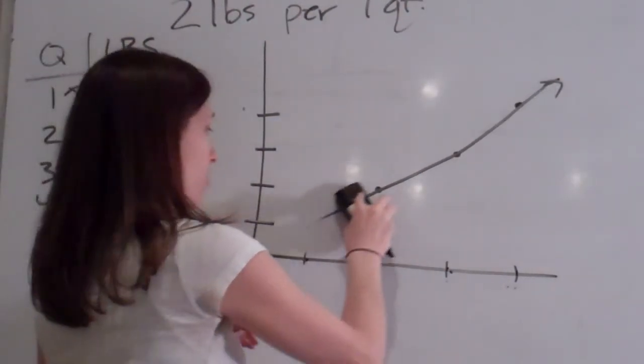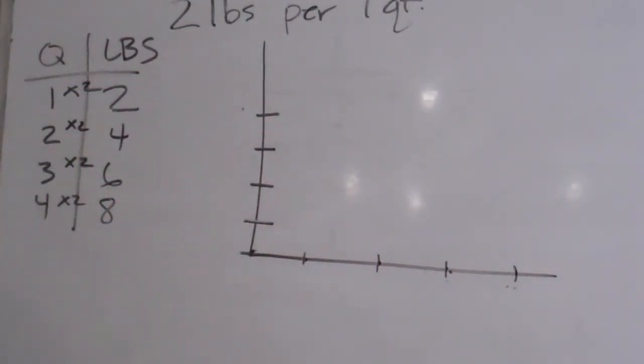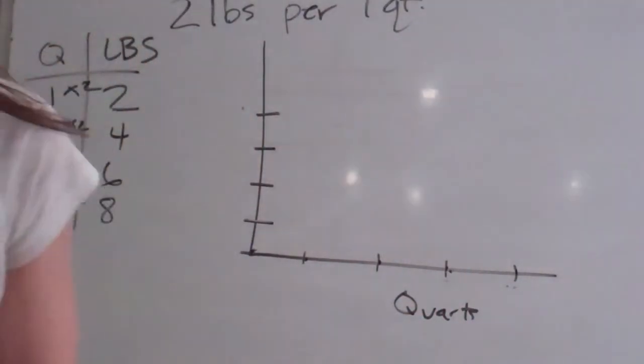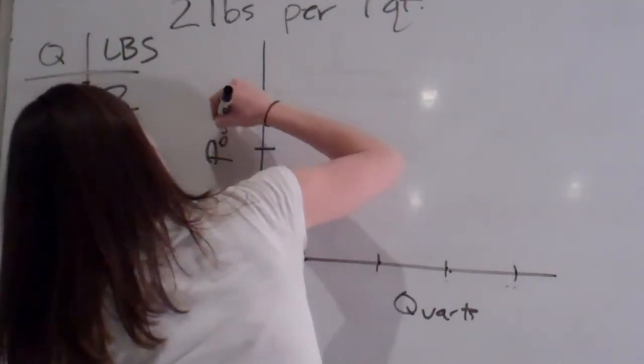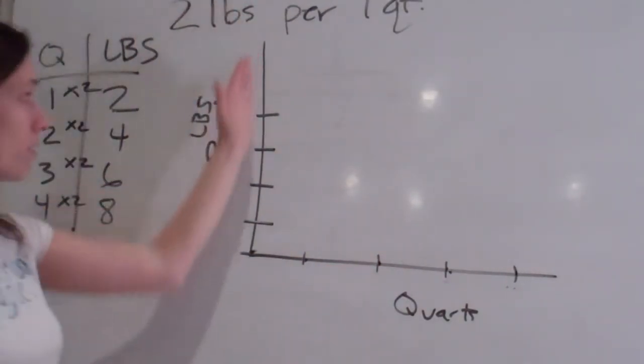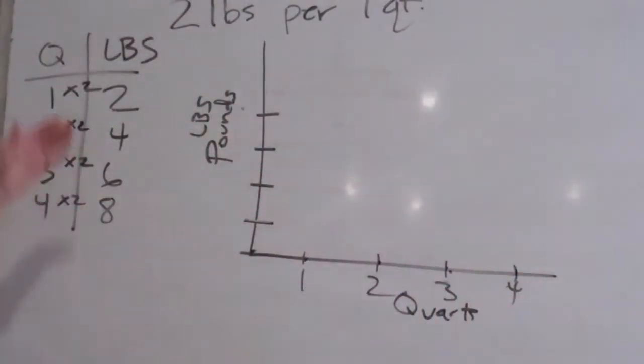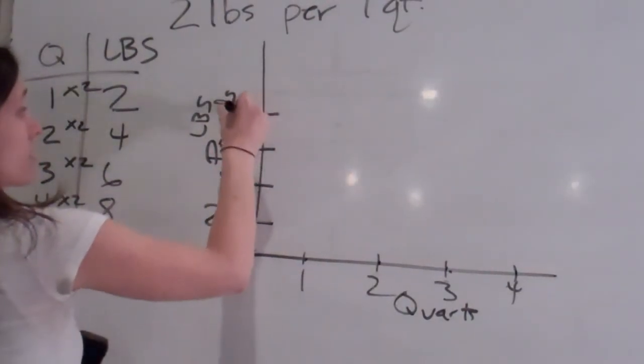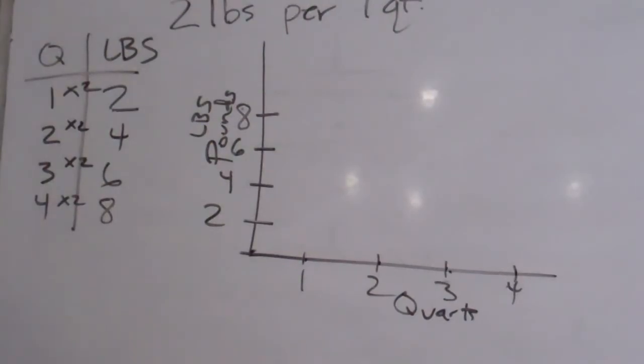Now, we have to graph it because that's what they want us to do. Graph the points on a coordinate plane using the horizontal axis for quarts, so we need quarts down here, and using the vertical axis for pounds. Everybody understands the difference between vertical and horizontal, right? Vertical means straight up. Horizontal means left and right. So our quarts are one, two, three, and four, so I'm going to number one, two, three, and four. Our pounds are by twos, so that's how I'm going to label them over here as well. Two, four, six, and eight.